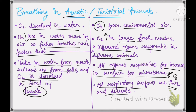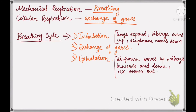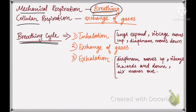Now let's talk about respiration in humans. The first part of respiration is breathing — inhaling air so that oxygen enters our lungs. There are two types of respiration happening: mechanical respiration, which involves just breathing — inhalation and exhalation — and cellular respiration, which involves the exchange of gases inside our body.